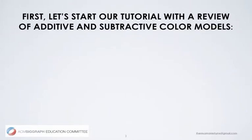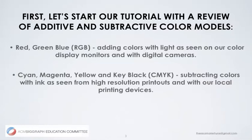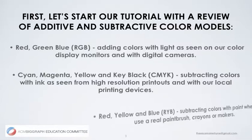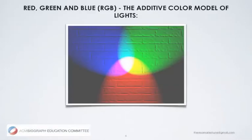Let's start our tutorial with a review of additive and subtractive color models. We will review red, green, blue — adding colors with light as seen on our color display monitors and digital cameras. Cyan, magenta, yellow, and key black — subtracting colors with ink as seen from high-resolution printouts and local printing devices. Red, yellow, and blue — subtracting colors with paint when we use a real paintbrush, crayons, or markers. So let's talk about red, green, and blue RGB, the additive color model of lights.